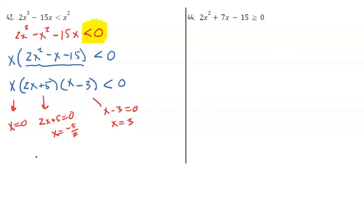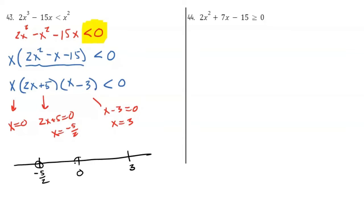Now you create a number line and put those values in order: −5/2, then 0, then 3. Because I strictly want to be less than zero — not equal — I'm gonna put open circles there, so my intervals will use parentheses, not brackets. Now I'll do some testing. Pick any number below −5/2, like negative one million. Plugging it in: each factor gives a negative, so negative × negative × negative is overall negative. I like negative values because I'm looking to be less than zero.